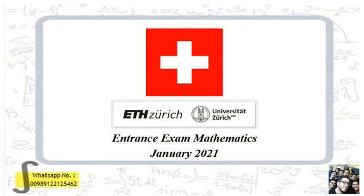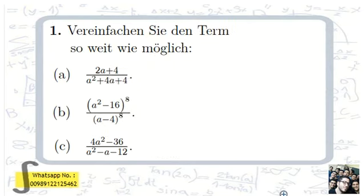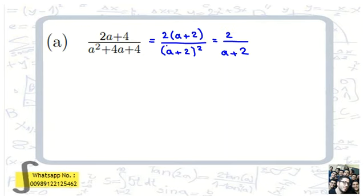The first problem says — if you translate it to English — simplify as much as you can, to the simplest form, each term. Let's start with part a: 2a plus 4, all over a squared plus 4a plus 4.